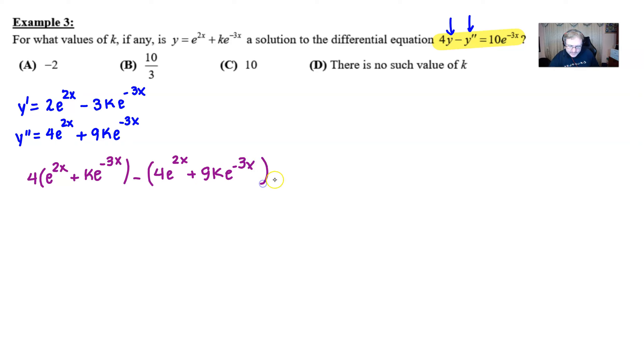And what our hope is, is that this would be equivalent to the right side, which is 10e to the negative 3x. Well, we're going to have to do a bit of simplifying on this left side to see if that's true. So, we'll distribute our 4 as usual here. 4e to the 2x plus 4ke to the negative 3x. Let's distribute our negative: 4e to the 2x minus 9ke to the negative 3x.